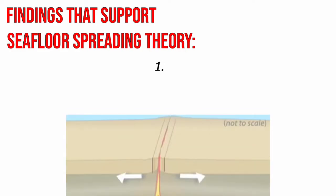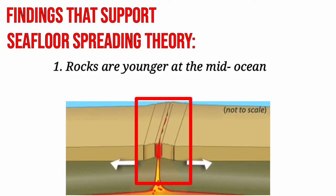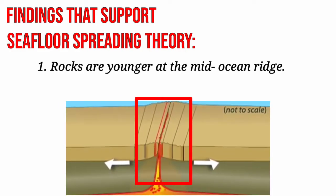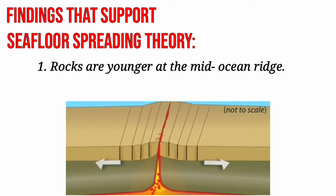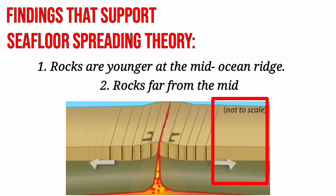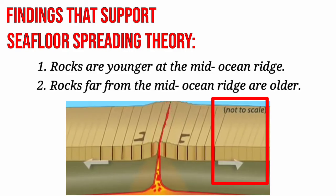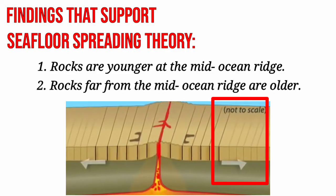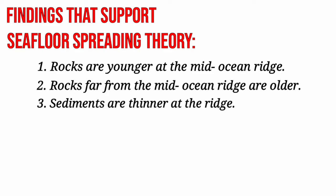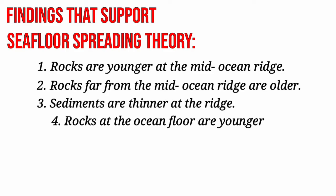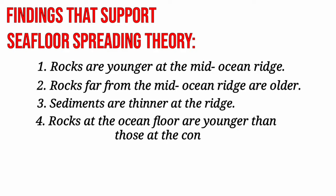Here are the findings that support the seafloor spreading theory: 1. Rocks are younger at the mid-ocean ridge. 2. Rocks far from the mid-ocean ridge are older. 3. Sediments are thinner at the ridge. 4. Rocks at the ocean floor are younger than those at the continents.